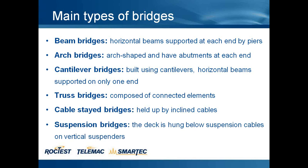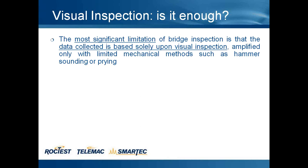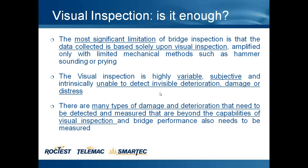And finally, suspension bridges where the deck is hung below the suspension cables on vertical suspenders. The first question regarding structural health monitoring for bridges is: is visual inspection enough, or is something more necessary? The most significant limitation of bridge inspection is that the data collected is based solely upon visual inspection. Furthermore, visual inspection is highly variable, subjective, and intrinsically unable to detect invisible deterioration, damage, or distress. There are many types of damage and deterioration that need to be detected and measured that are beyond the capabilities of visual inspection.